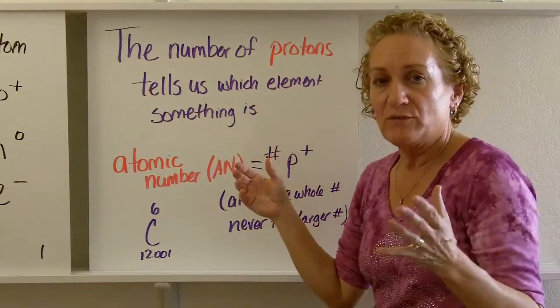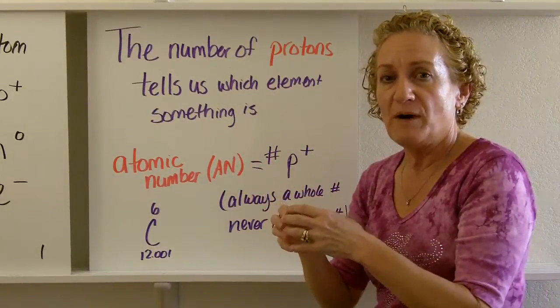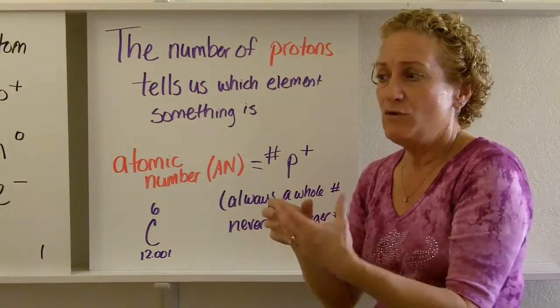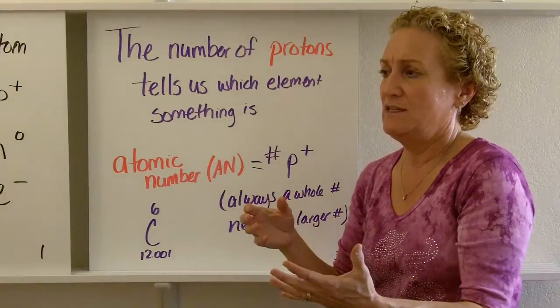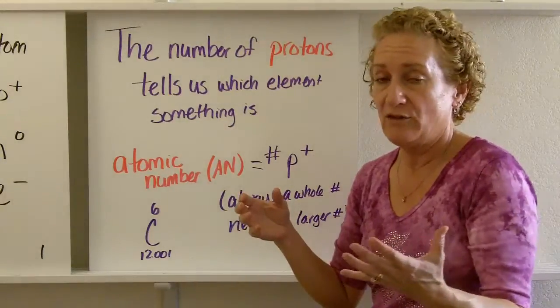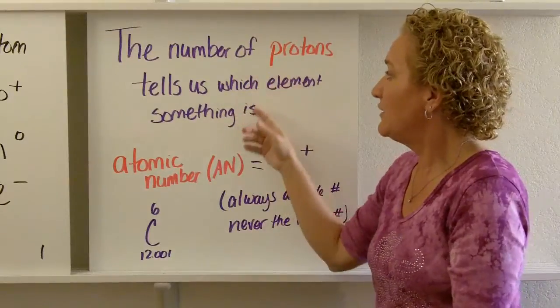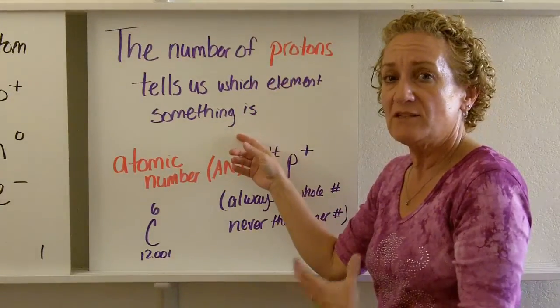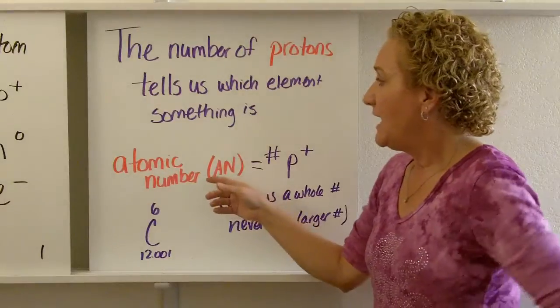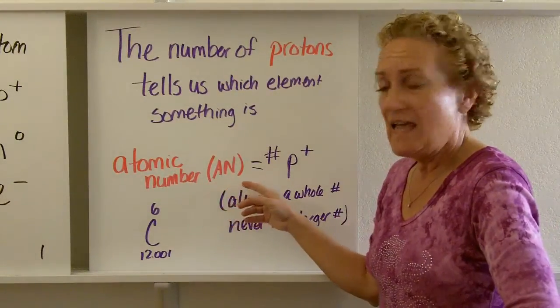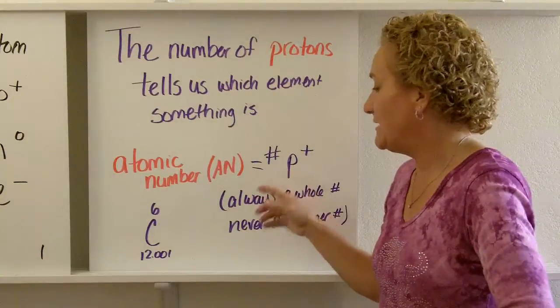So why is this important? Well, electrons are what do the bonding, but protons are what tell you what something is. If you get something and you go, I have no idea what this is, you could say, I don't know, let's count the protons and look at the periodic table and find out. Protons tell us which element something is. If you want to know what something is, look at the number of protons. It's called the atomic number, sometimes abbreviated AN, and that tells you the number of protons.